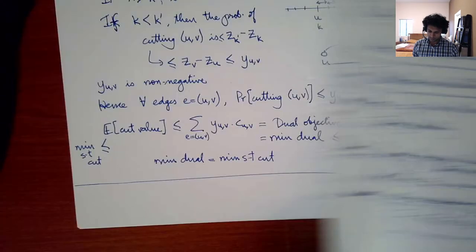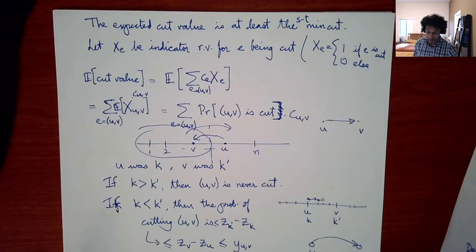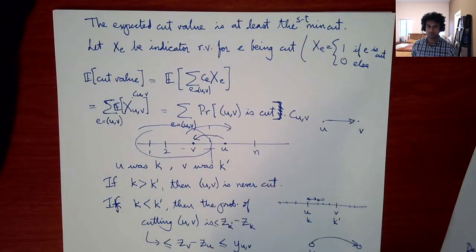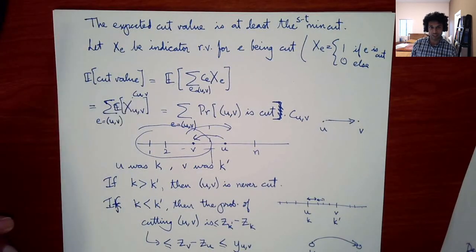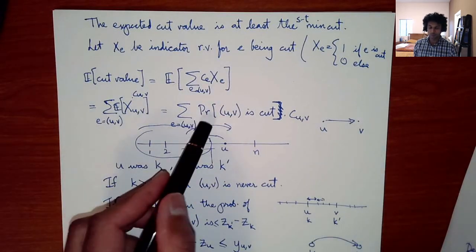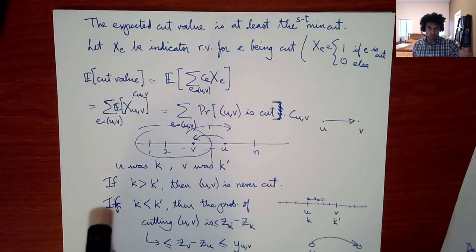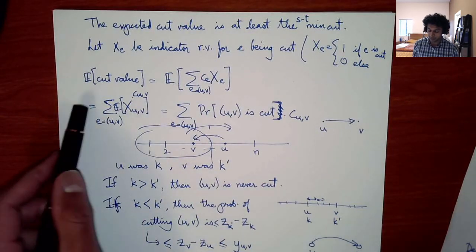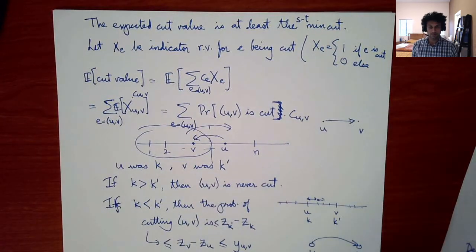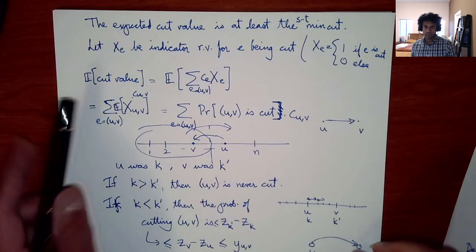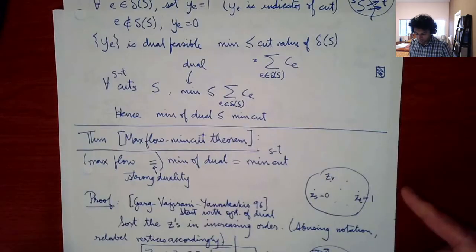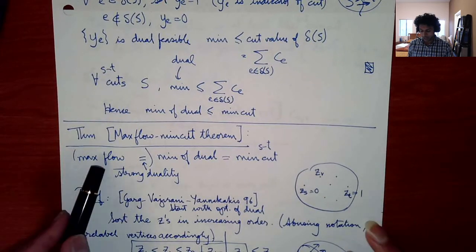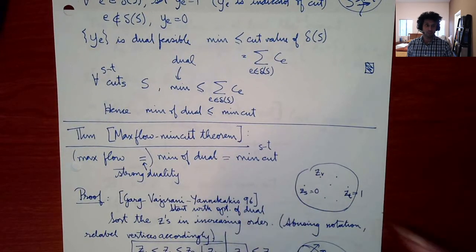The expected cut value is at least the ST min cut. Using an indicator random variable for each edge being cut and the bound that the probability of cutting (u,v) is at most the dual variable Y_{UV}, the expected cut value is at most the min of the dual. But the expected cut value is also at least the min cut, so they are all equal. This proves the max flow equals the min ST cut.